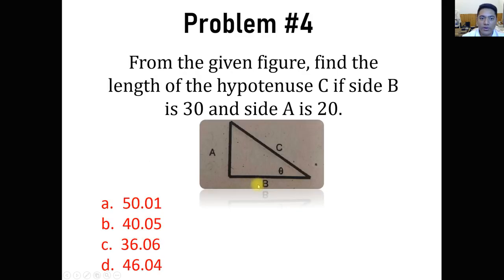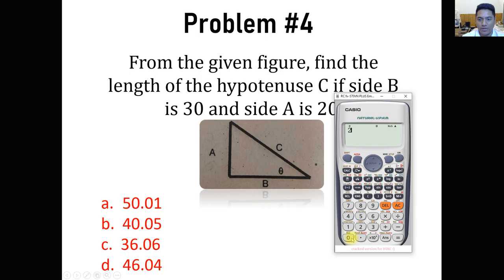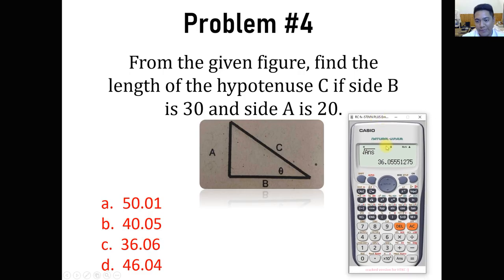For problem number 4, from the given figure, find the length of the hypotenuse C if side B is 30. This is a right triangle, so we can simply get the value of C using the Pythagorean theorem: square root of 20 squared plus 30 squared equals 36.06. But just in case you forgot the Pythagorean formula, you can also use polar and rectangular conversion to get the hypotenuse.